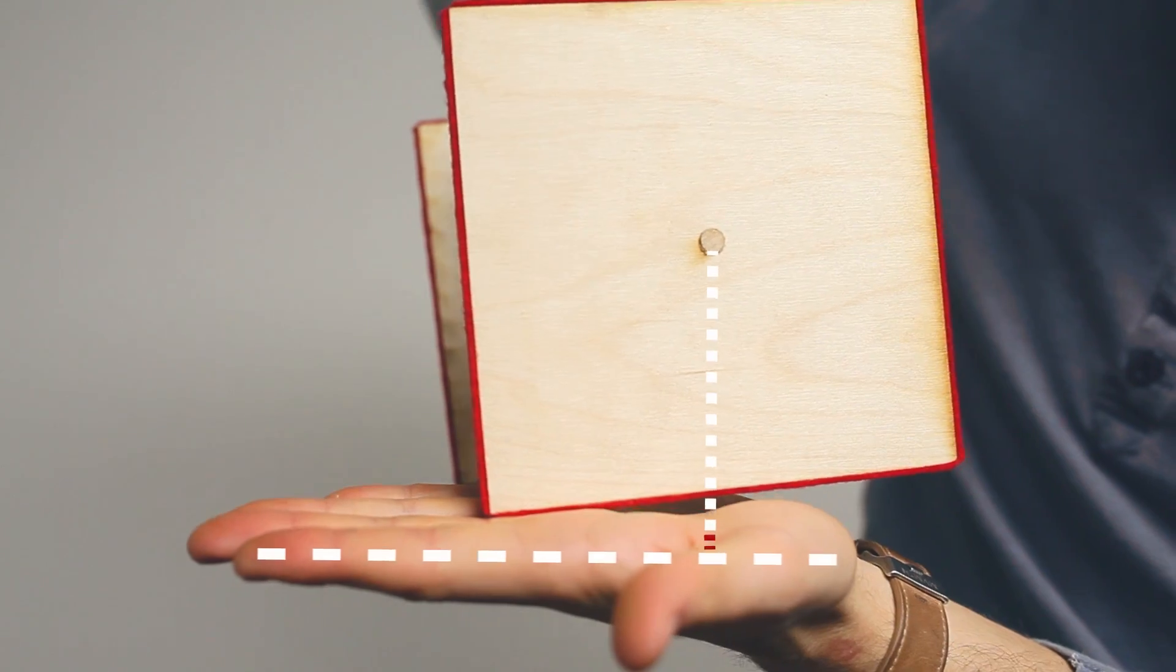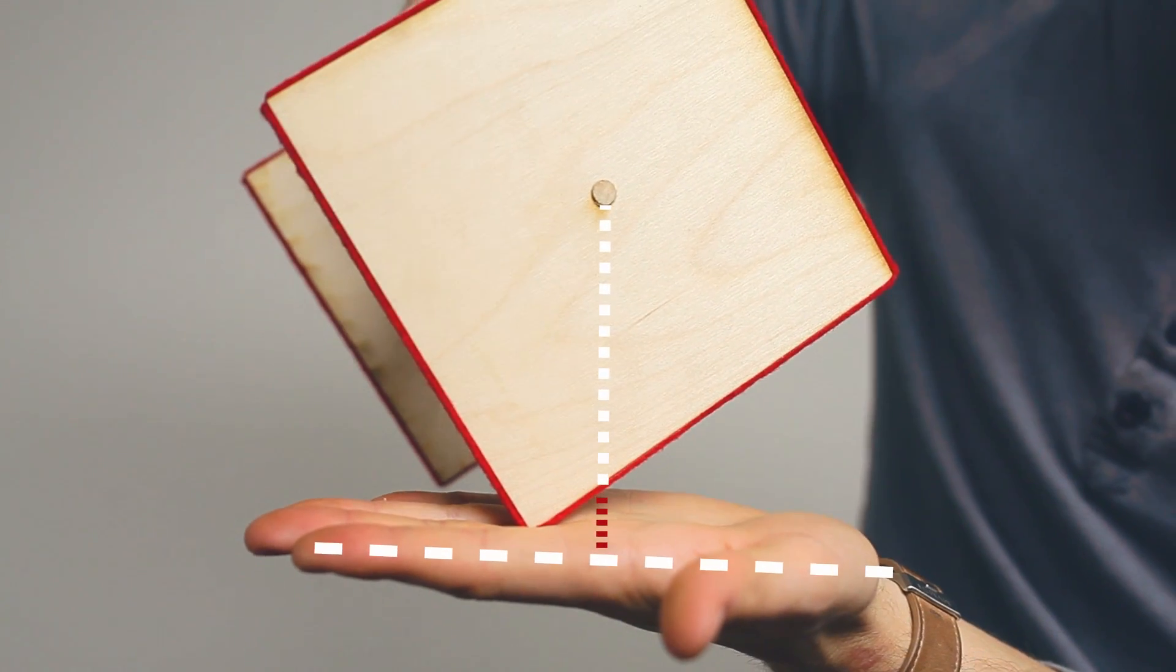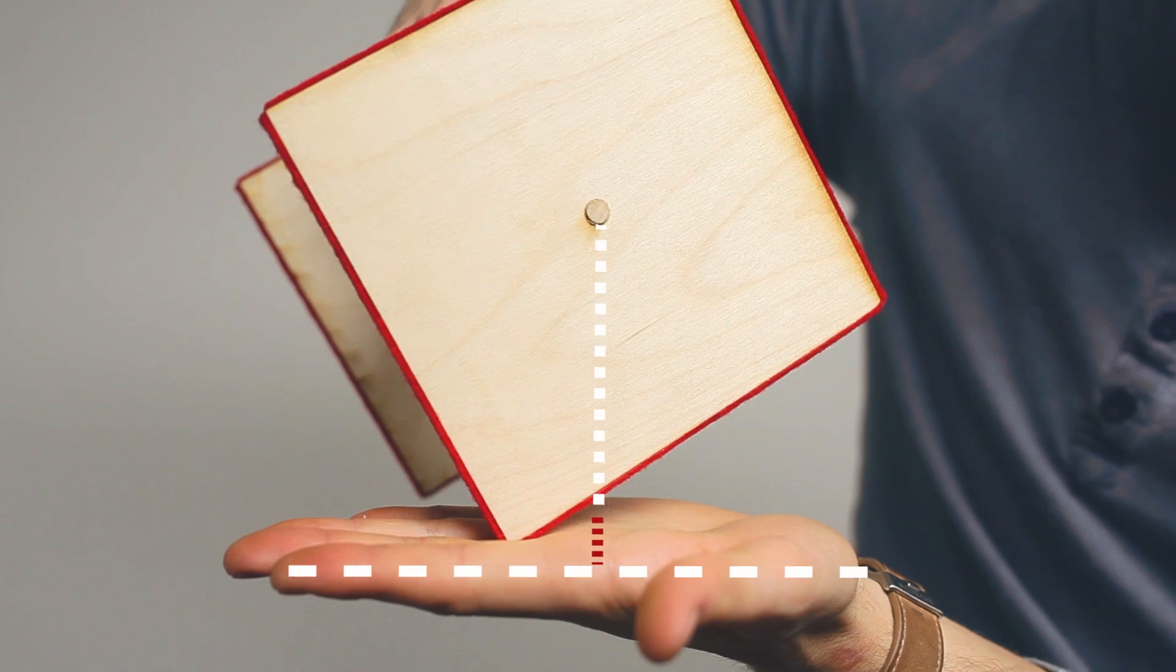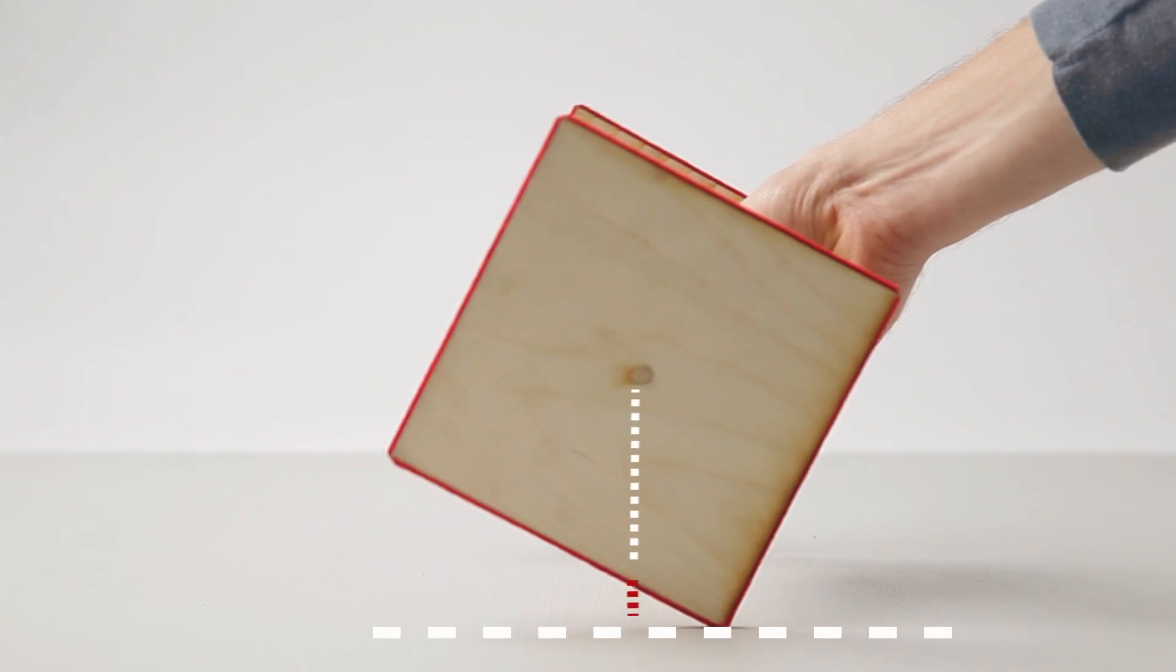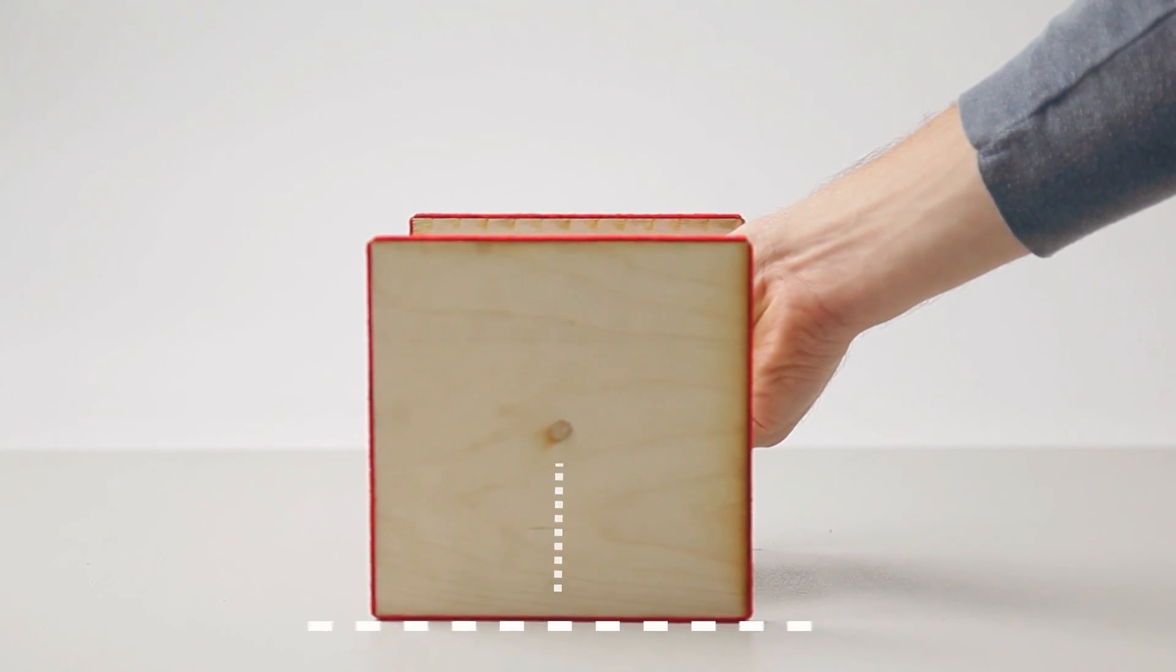If we take a square, however, and we try and do the same thing, notice how the axle gets farther away from my hand, which means if a car had square wheels, you would actually have to lift the car up every time the wheel tried to turn. Very, very difficult.